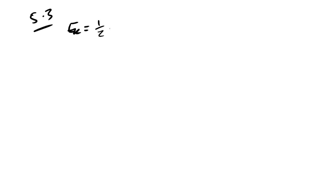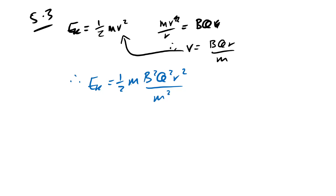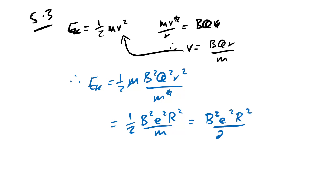Question 5.3: show that EK = B²e²R²/(2m). We know EK = ½mv². In a cyclotron, things go in circles, so equate forces: mv²/r = Bqv. One v cancels, giving v = BqR/m. Substituting into EK: EK = ½m(BqR/m)² = ½ × B²q²R²/m = B²e²R²/(2m), replacing q with e and using capital R. Things going in circles — always equate forces.